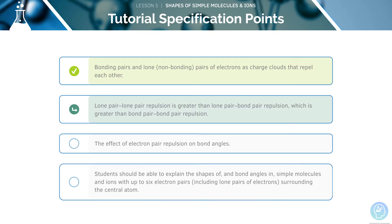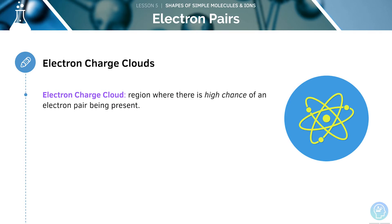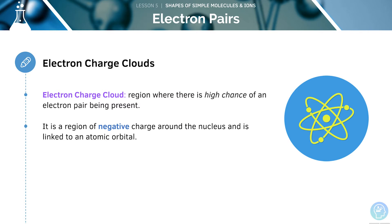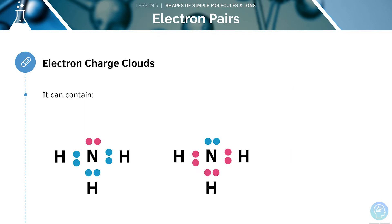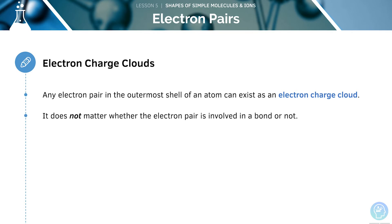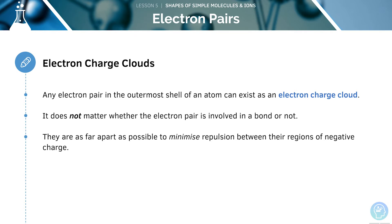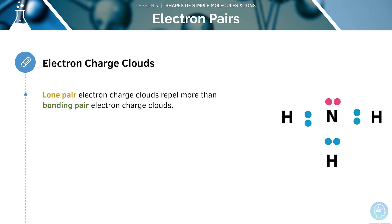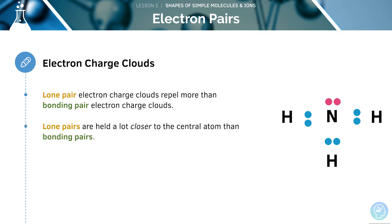Our next specification point is to look at the various types of repulsion. Electron charge clouds are regions where there is a high chance of an electron pair being present. This is a region of negative charge around the nucleus and it is linked to an atomic orbital. An electron charge cloud can either contain lone pairs or bonding pairs of electrons. Any electron pair in the outermost shell of an atom can exist as an electron charge cloud. They are as far apart as possible in order to minimise the repulsion between their regions of negative charge.